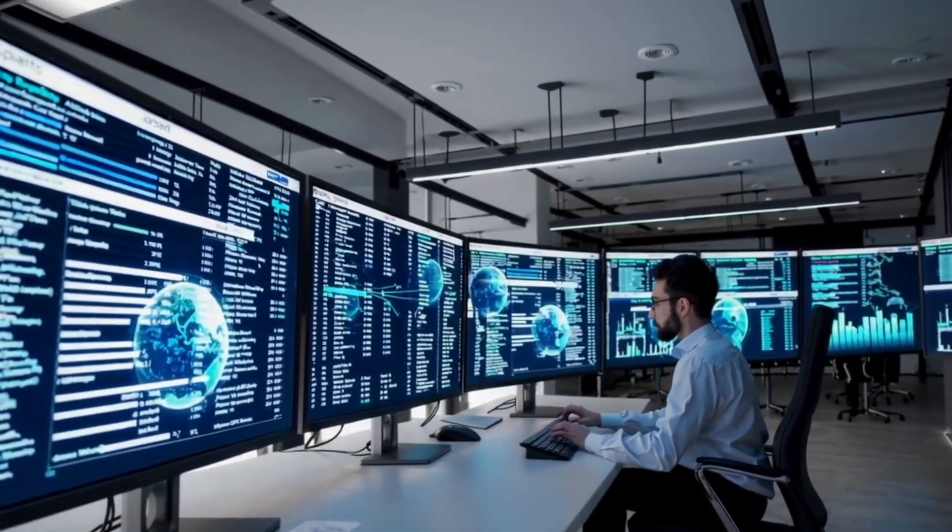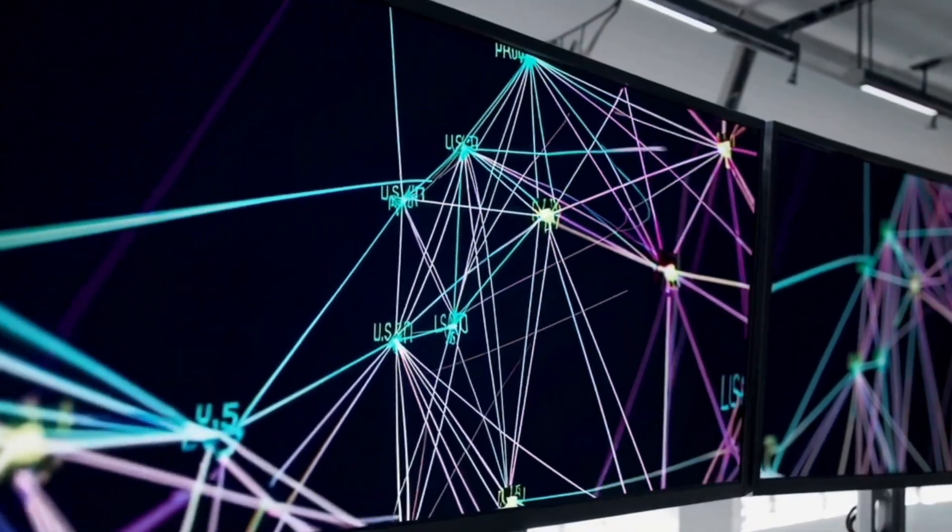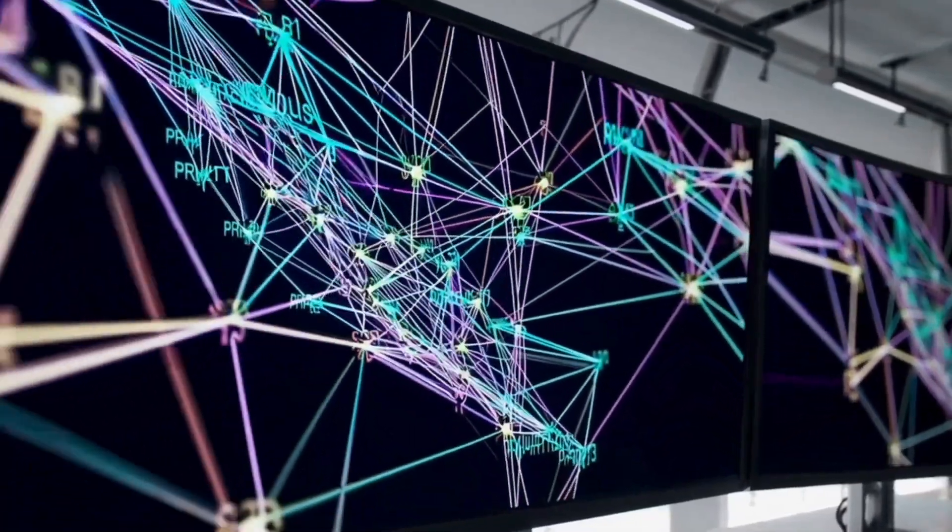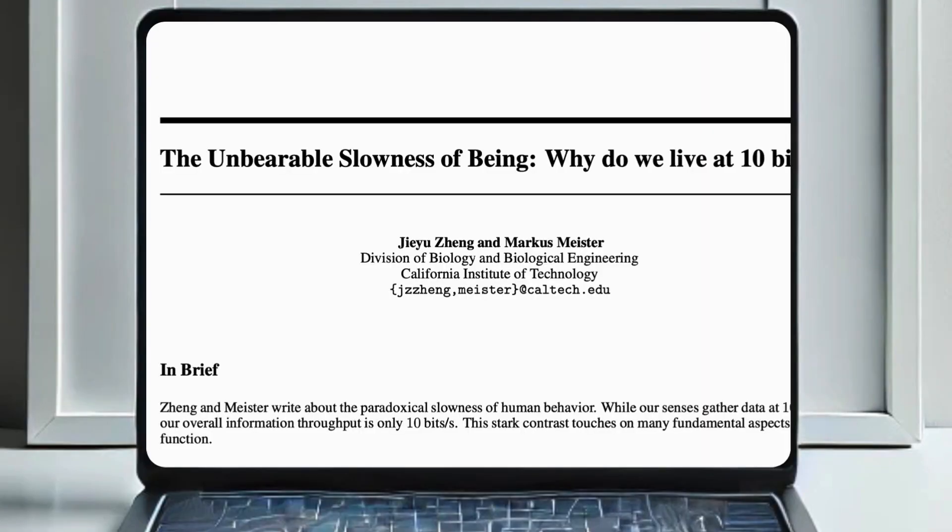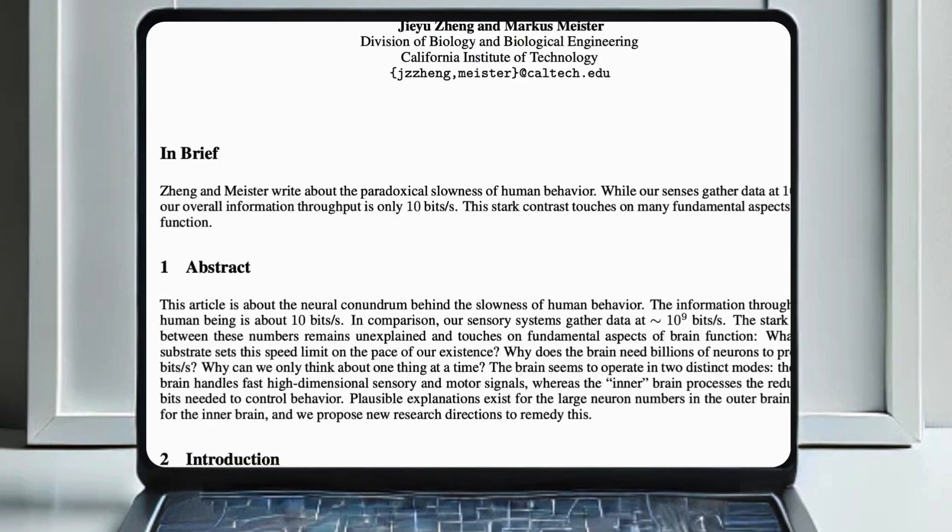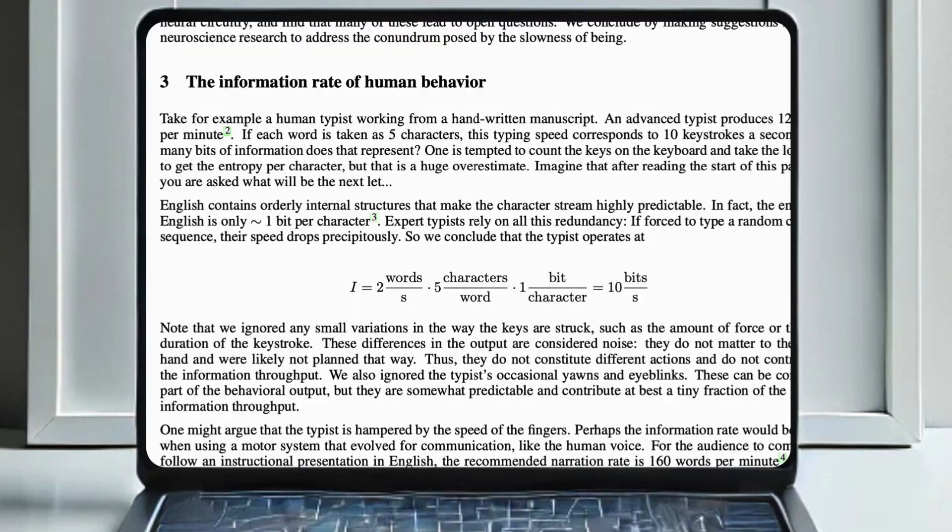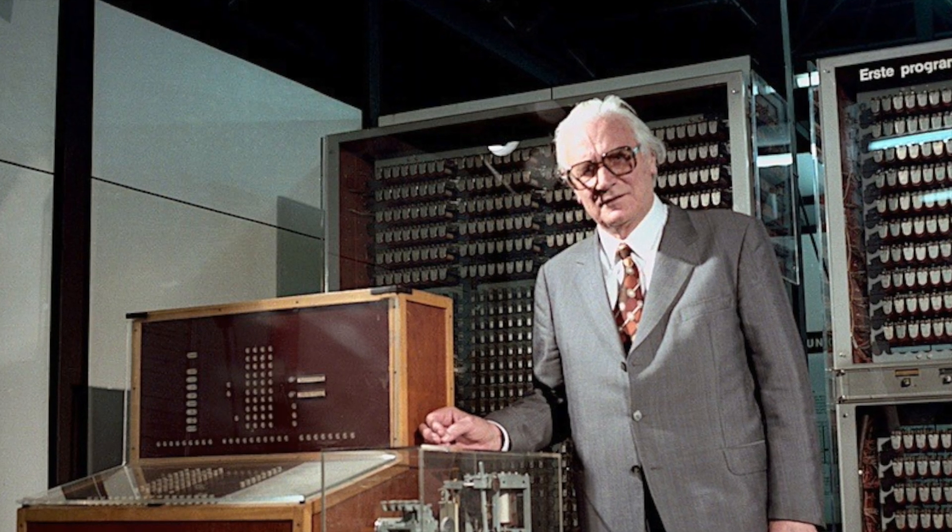For years, we've believed our brains outperform even the most powerful computers, a belief that fueled our pride to the peak. However, recent research reveals something shocking. Our brains process data at only 10 bits per second. Yes, you heard it right, just 10 bits per second.